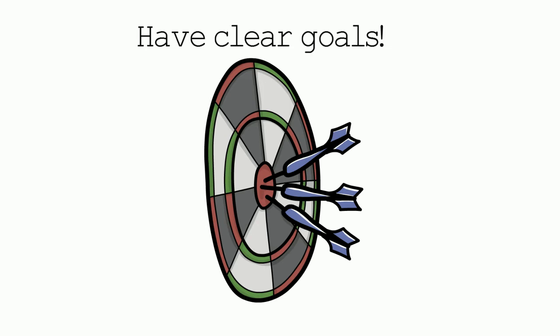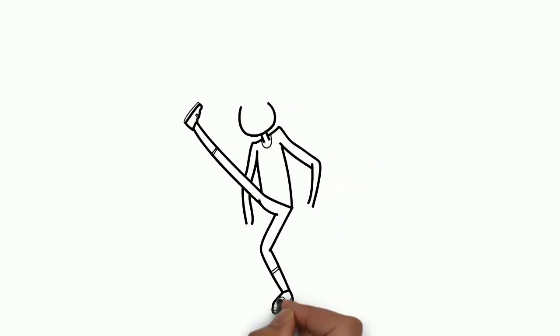Next tip: have clear goals. Be clear about yourself — where you're going, what you're doing. Do you need to improve your vocabulary? Make sure the goals are clear, time-related, and you know what you're doing.